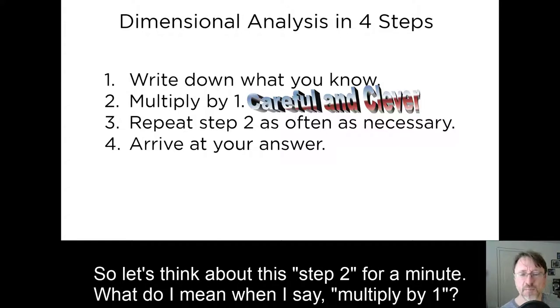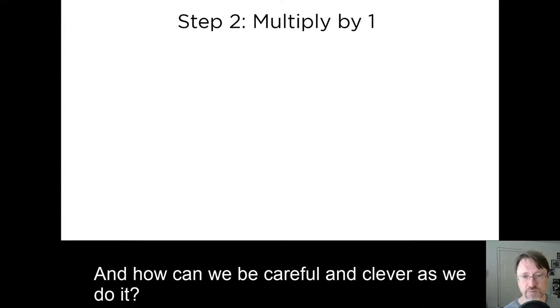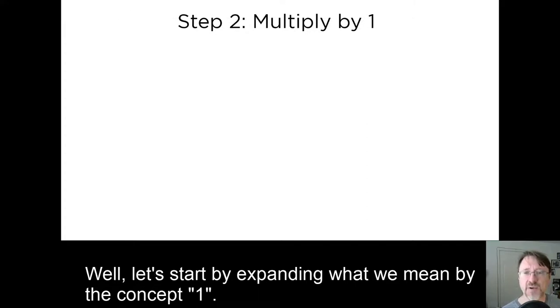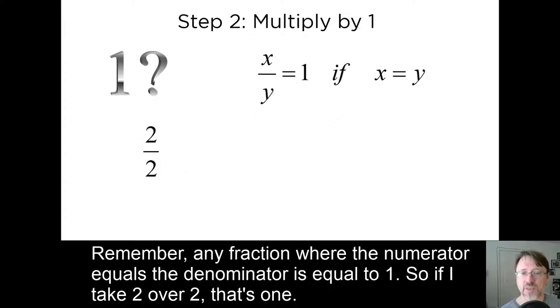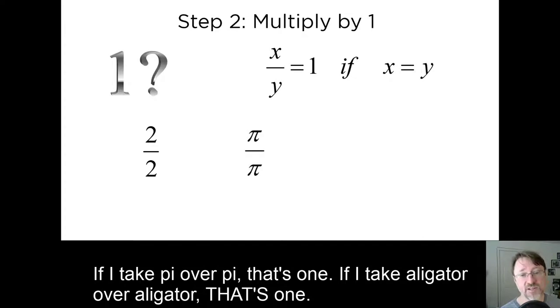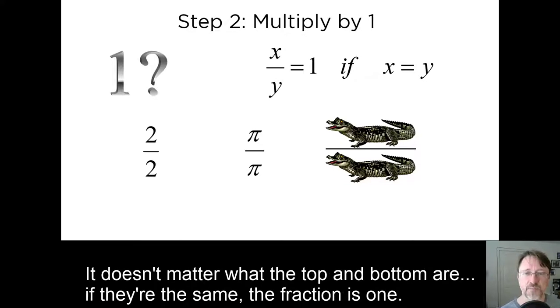So let's think about this step two for a minute. What do I mean when I say multiply by one, and how can we be careful and clever as we do it? Well, let's start by expanding what we mean by the concept of one. Remember, any fraction where the numerator equals the denominator is equal to one. So if I take two over two, that's one. If I take pi over pi, that's one. If I take alligator over alligator, that's one. It doesn't matter what the top and bottom are. If they're the same, the fraction is one.